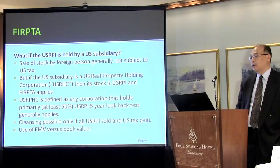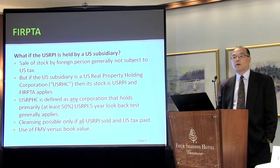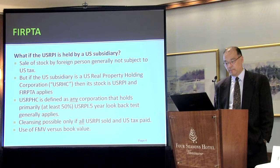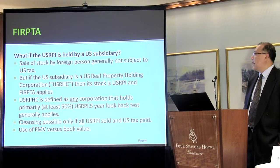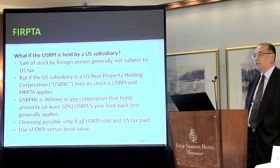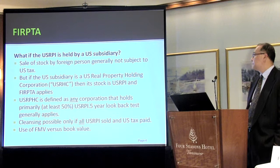Can we somehow get out of FERPTA by having the Canco not hold the U.S. property directly, but set up a U.S. sub to hold U.S. real property and then sell the stock of the U.S. sub? Most of us know that when you sell stock of a U.S. corporation, normally that's not taxed in the U.S. by a foreign person. But the provisions of FERPTA provide that if the stock in the U.S. sub is U.S. RPI, then your sale of that stock becomes subject to FERPTA.